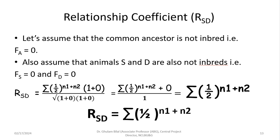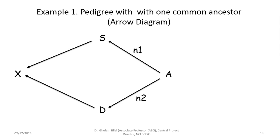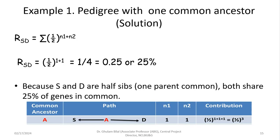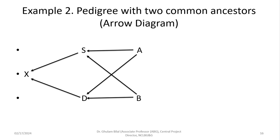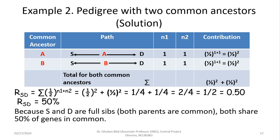If we assume Fa = 0, Fs = 0, and Fd = 0, then Rsd simplifies to: summation of (1/2)^(n1 + n2). For the one-common-ancestor example, n1 + n2 = 1 + 1 = 2, giving (1/2)^2 = 0.25 or 25%. Since S and D are half sibs sharing one common parent, they share 25% of genes. For the two-common-ancestor (full-sib) example: (1/2)^2 + (1/2)^2 = 1/4 + 1/4 = 0.5. Rsd = 0.5 or 50%, because S and D are full sibs sharing both parents and thus 50% of genes.